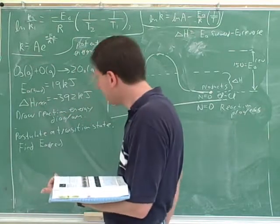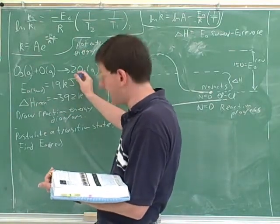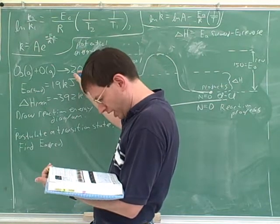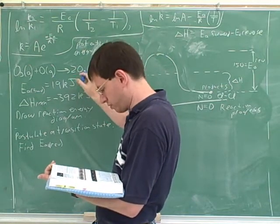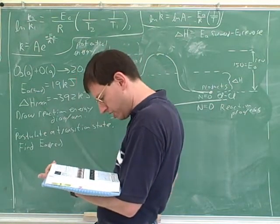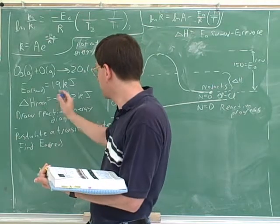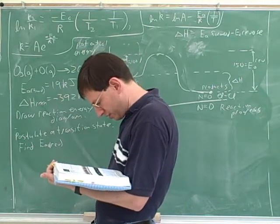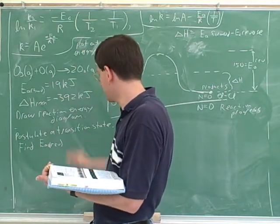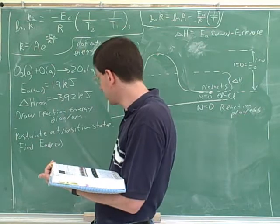Let's try this example. Here we have a reaction: O3 gas plus O gas forms two O2 gas. The activation energy forward is 19 kilojoules, and delta H for the reaction is negative 392 kilojoules.